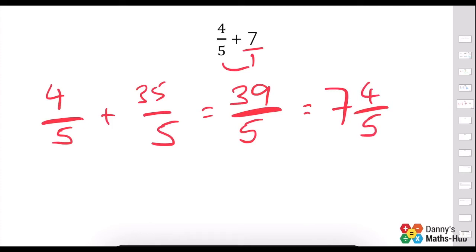And because, if you remember from what I said last time, if we wanted to put this in our calculator, we put in 7 and 4 over 5, and this is exactly what we've got here.